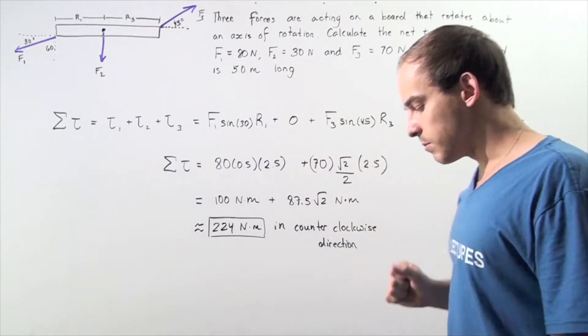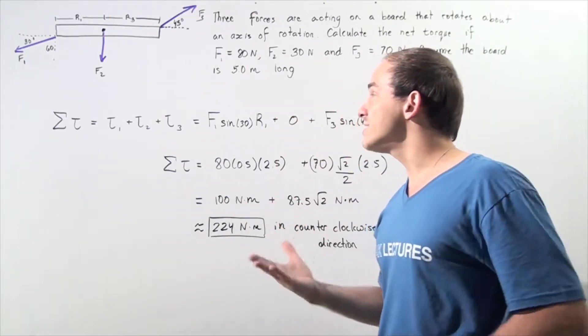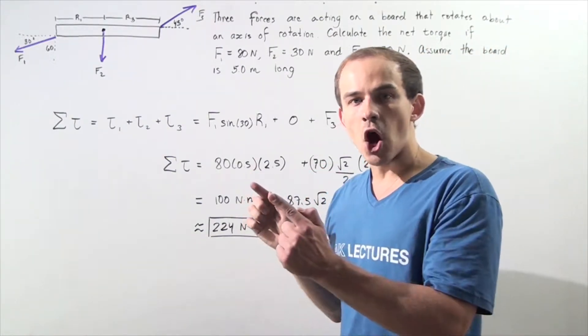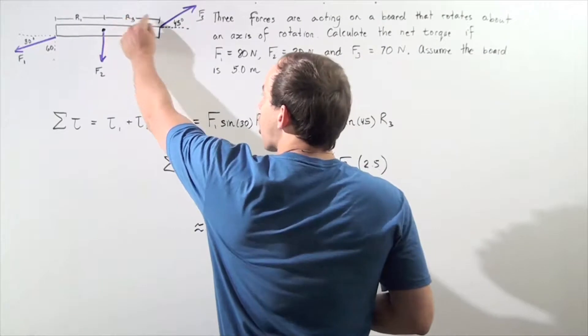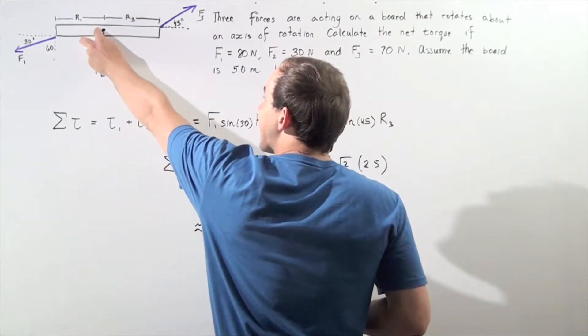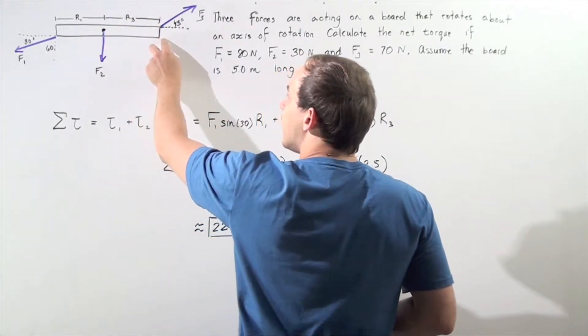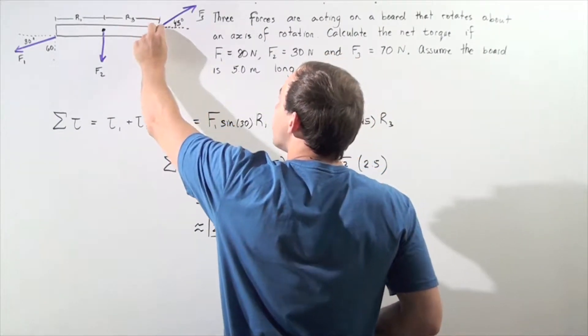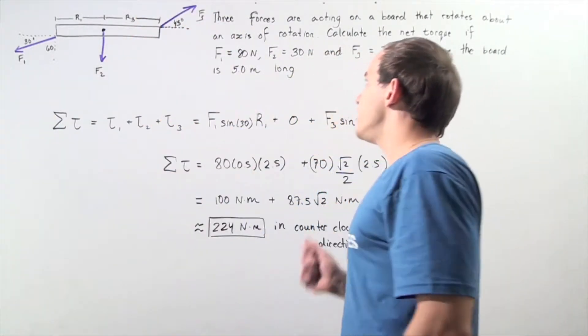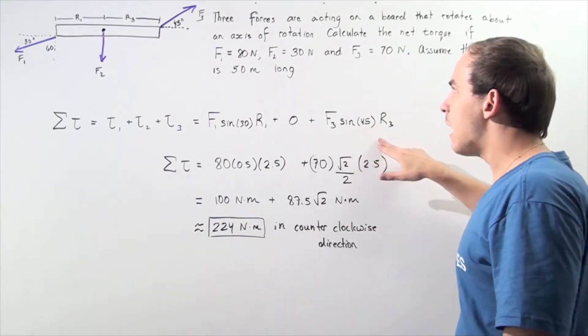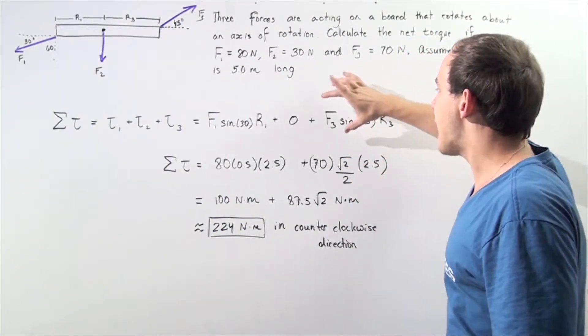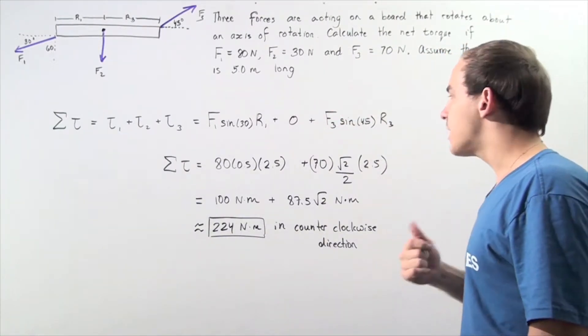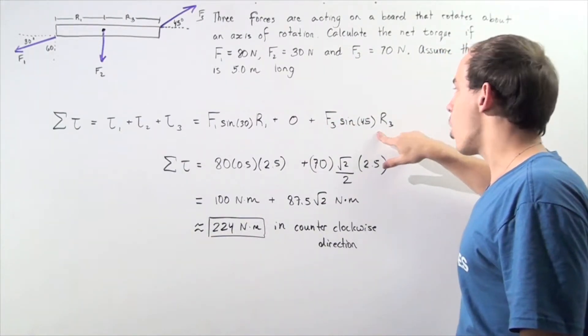What about torque number 3? Torque 3, once again, is the force that is perpendicular to the lever arm, and the lever arm, we choose to be R3, beginning at the axis of rotation and ending at the edge. That means we have to find, once again, the y component force. So we take the sine of the angle 45, multiply it by our magnitude of force 3, and multiply that by the lever arm, R3.